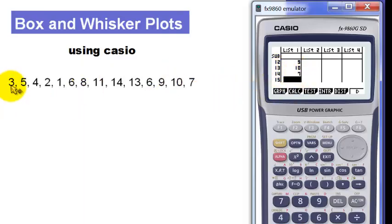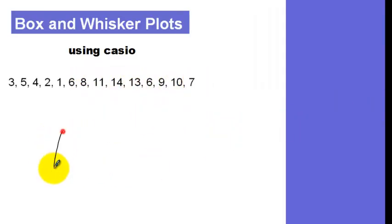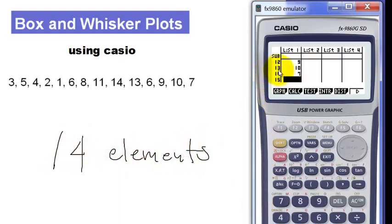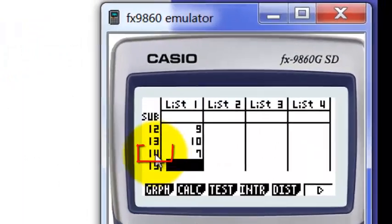Now, just to check, let's count how many elements do we have here. 1, 2, 3, 4, 5, 6, 7, 8, 9, 10, 11, 12, 13, 14. So all in all, we have 14 elements. And check, so we have here 14 numbers also.